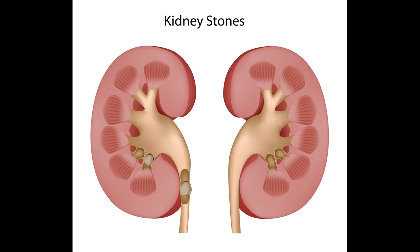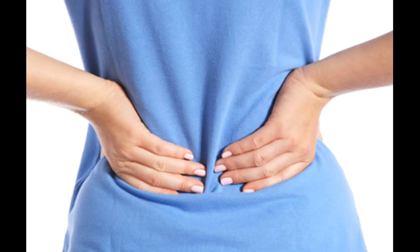To prevent cystine stones, a person should drink enough water each day to dilute the concentration of cysteine that escapes into the urine, which may be difficult — more than a gallon of water may be needed every 24 hours, with a third drunk during the night. A doctor may prescribe certain medications to help prevent calcium and uric acid stones. These medicines control the amount of acid or alkali in the urine, key factors in crystal formation. The medicine allopurinol may also be useful in some cases of hyperuricocuria. Doctors usually try to control hypercalciuria and prevent calcium stones by prescribing certain diuretics, such as hydrochlorothiazide, which decrease the amount of calcium released by the kidneys into the urine by favoring calcium retention in bone, and work best when sodium intake is low.